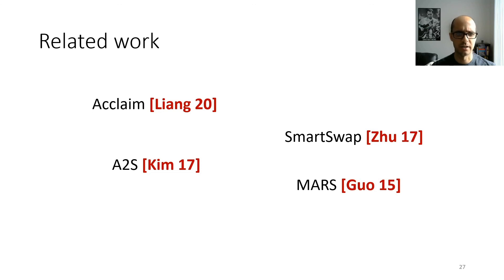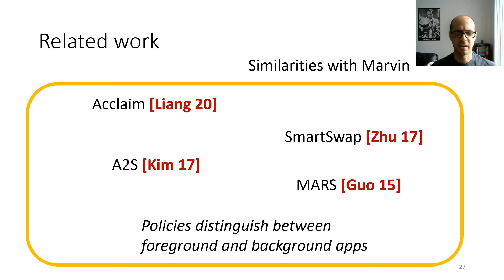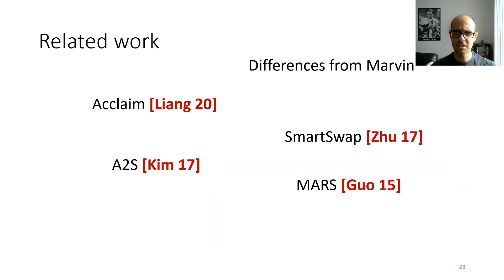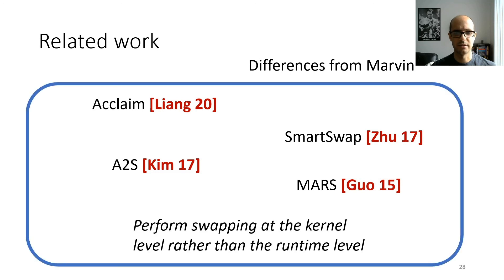There are several related systems focused on Android memory management, including Acclaim appearing at this conference, as well as SmartSwap, A2S, and Mars. One similarity these systems share with Marvin is that they have policies distinguishing between foreground and background apps, since it makes sense to prioritize the foreground app the user is directly interacting with. Mars also addresses the incompatibility between runtime garbage collectors and kernel-level swap. The most important difference is that all of them perform swapping at the kernel level rather than at the runtime level.